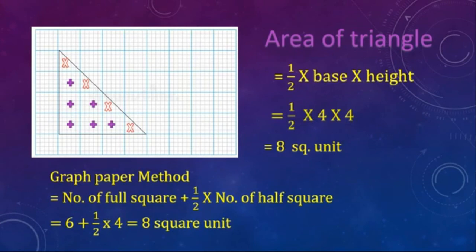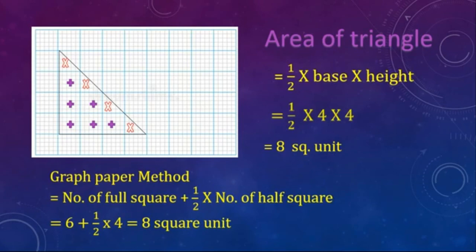The graphical method can also be used to determine the area of an object. First, take a graph paper and draw the diagram on it. Then count the number of full squares and half squares. The formula is: area = number of full squares + (½ × number of half squares). For example, 6 + ½ × 4 equals 8 square units. We can verify this using the formula: ½ × base × height = ½ × 4 × 4 = 8 square units. Both methods give the correct answer.